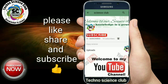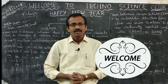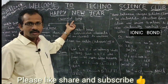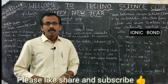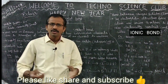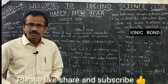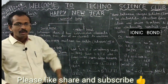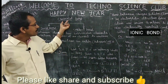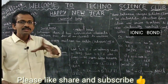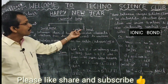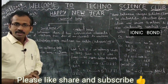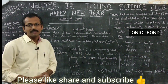Thank you, welcome to Techno Science Club. Today's important and interesting topic is from tenth class: chemical bonding. We have done two previous classes and two videos on this topic. Links are in the description box and cards. In this class we learn about chemical bonding, the types of chemical bonding, and specifically the ionic bond — what it is and how it is formed, with an example.